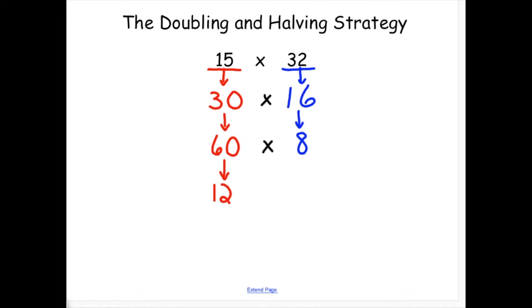If I continue to double the 60 and halve the 8, I now have 120 times 4, and one more time gets me 240 times 2. The doubling and halving strategy leads me to creating a much simpler multiplication problem that will get me the same answer as the original problem.